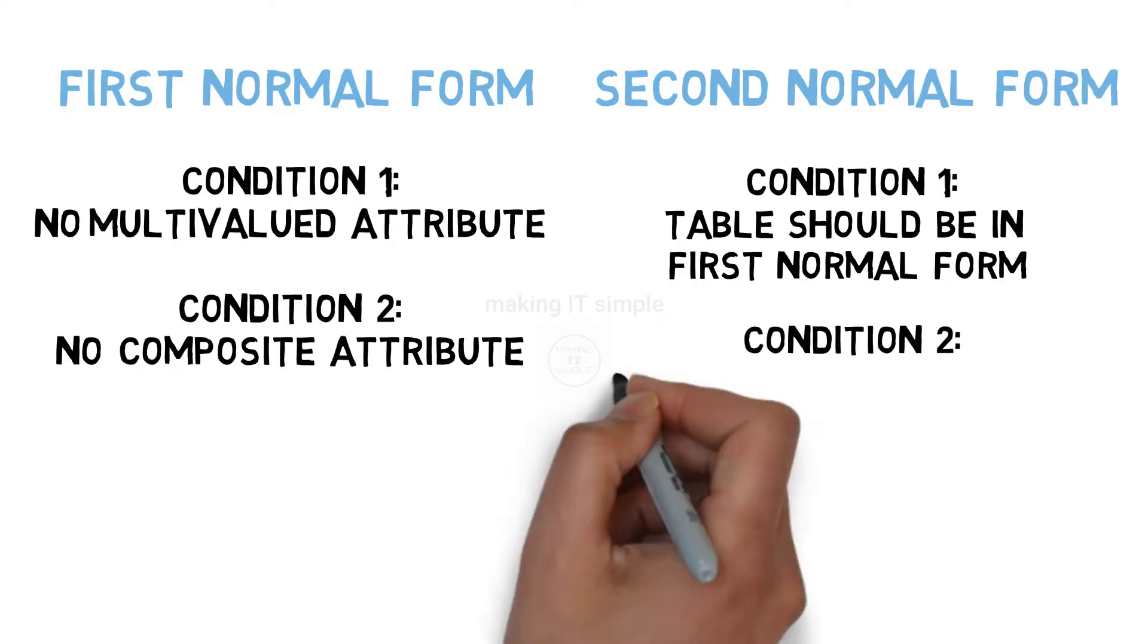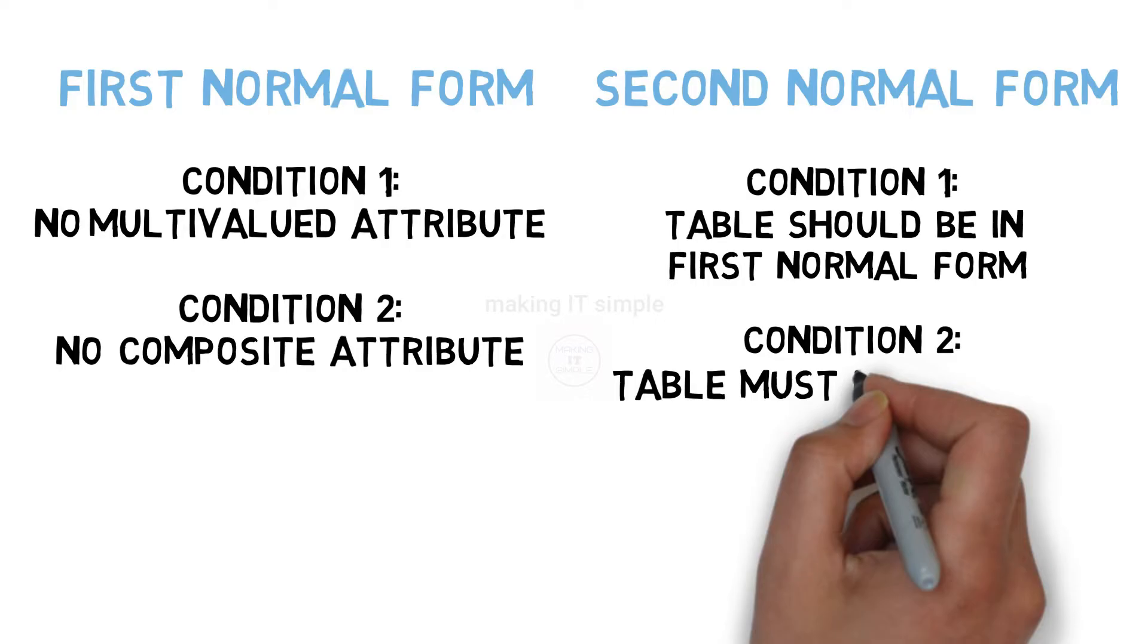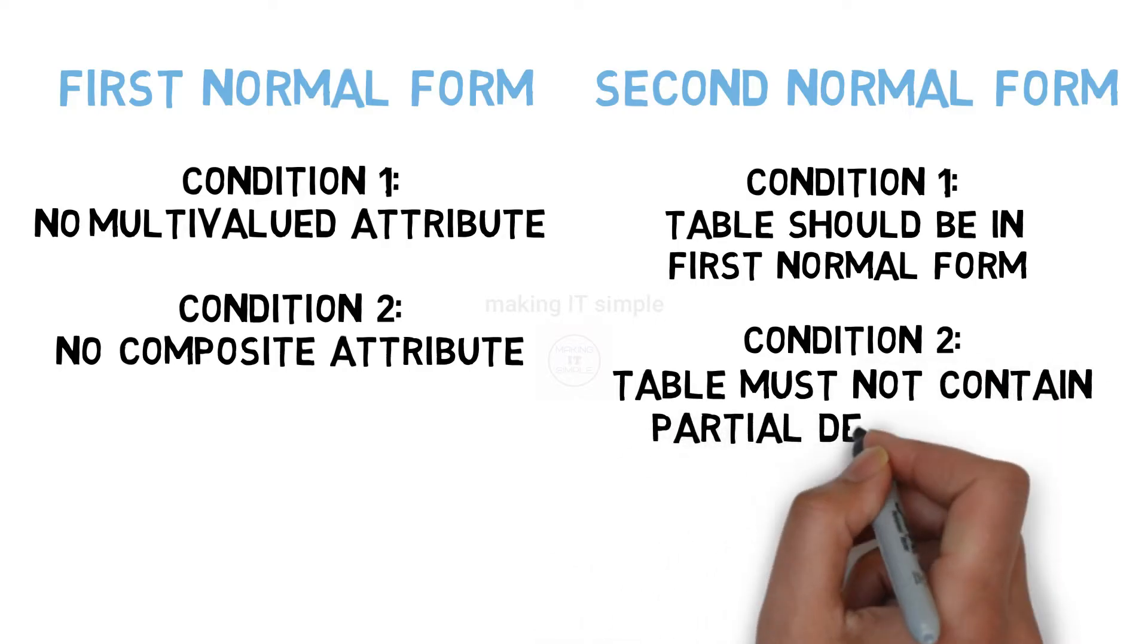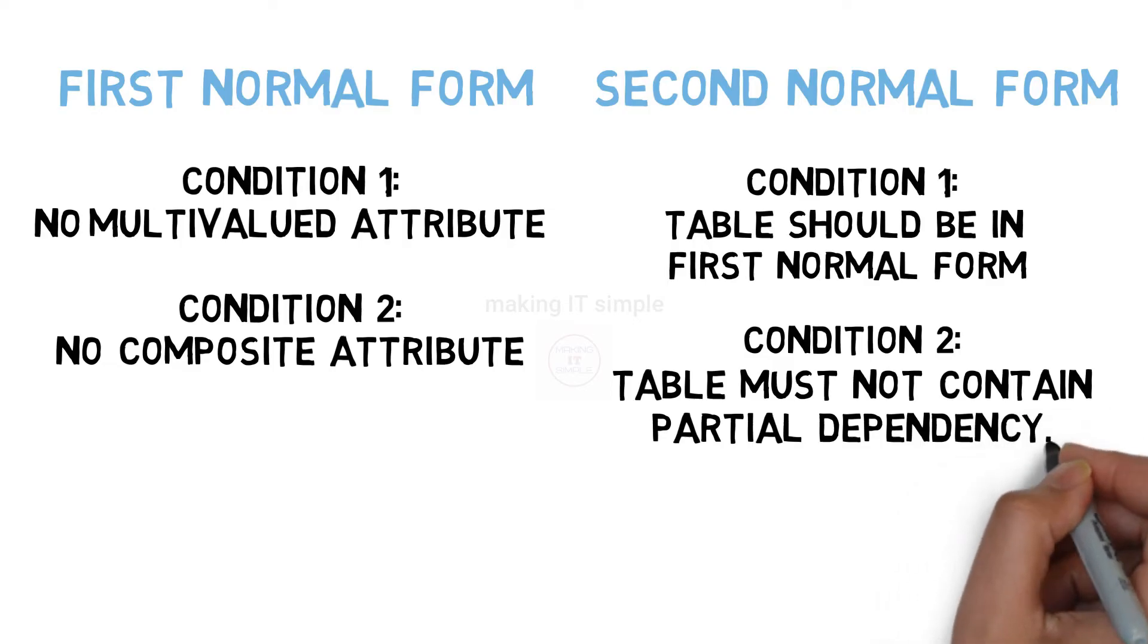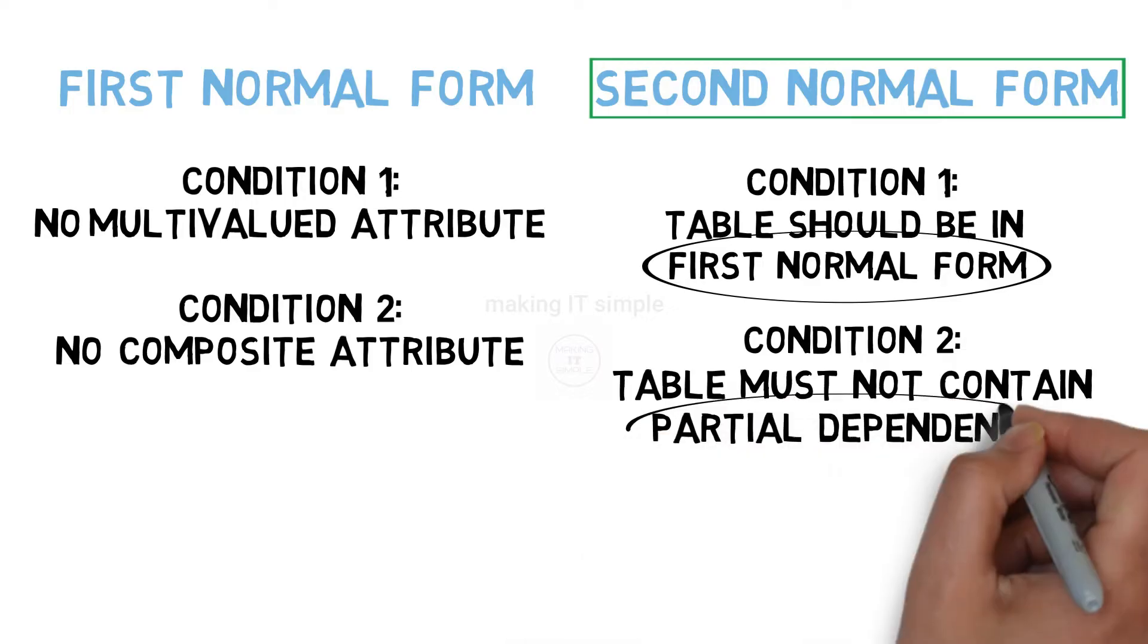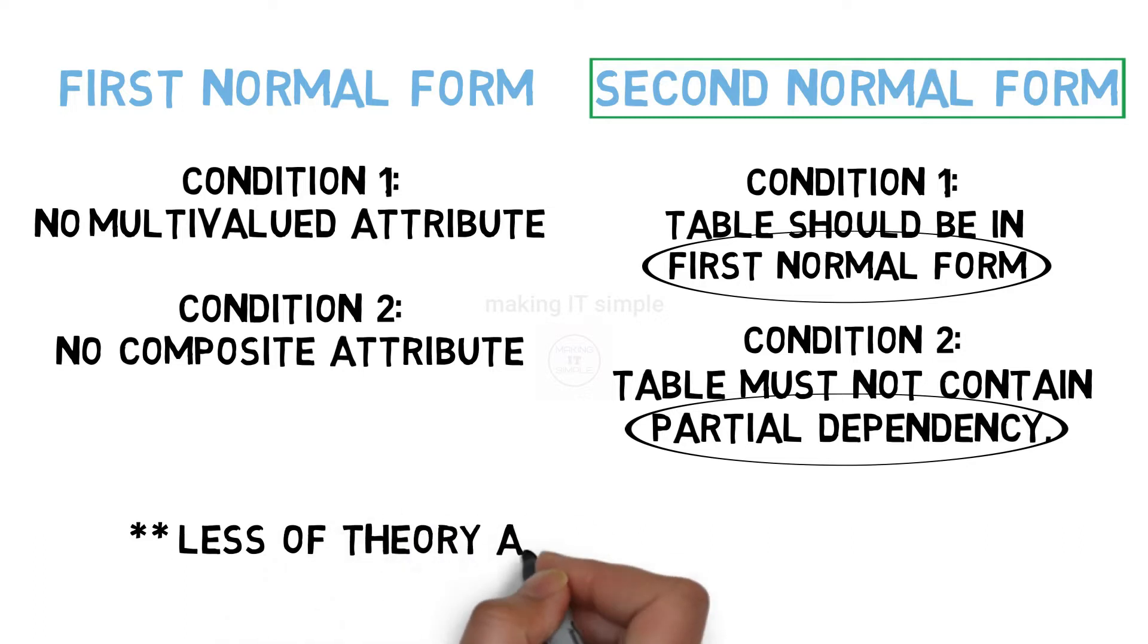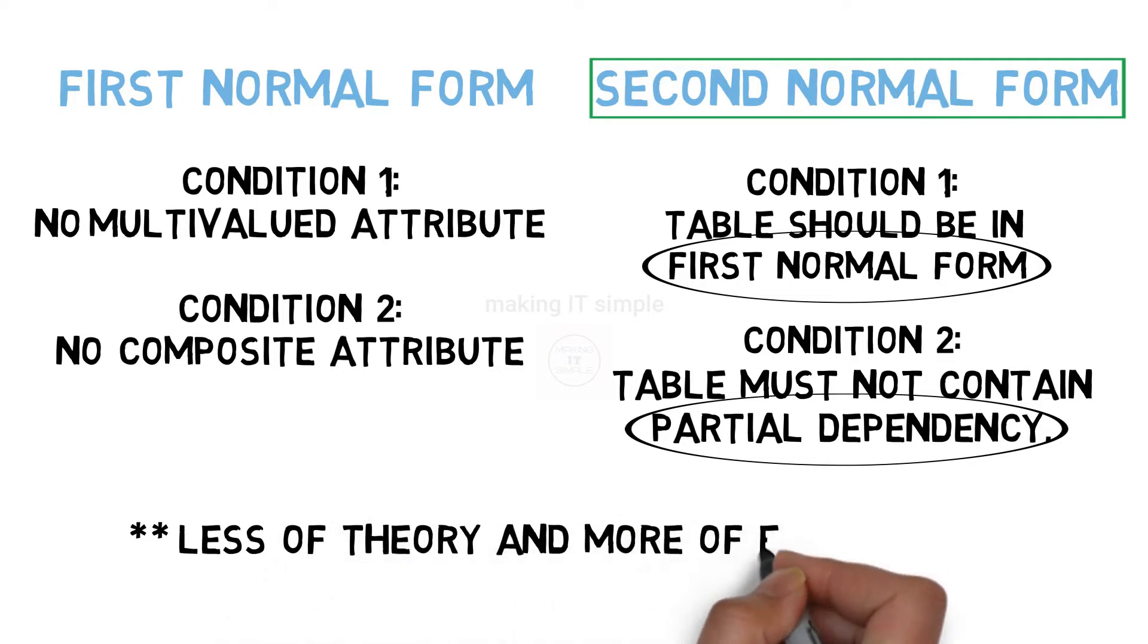And the second condition is that the table must not have any partial dependency present in it. So if these two conditions are satisfied by a table or a relation we can state that the table is in second normal form. I have already posted a video on first normal form and also on partial dependency. So I won't go in depth in these concepts. But we will see more of examples for better understanding. Let us see both conditions one by one.